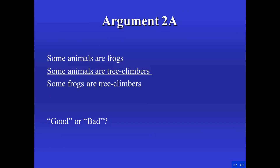Here's a different example argument. Some animals are frogs. Some animals are tree climbers. Therefore, some frogs are tree climbers. It happens that all the claims here are true as well, similar to argument 1a. But there's something different here. Even though it's true that some animals are frogs and true that some animals are tree climbers, does it have to be the case, on the basis of just those two claims, that some frogs are tree climbers? We can easily imagine a world in which the first and second premises are true but, contrary to the way the world actually is, there are no frogs that climb trees. That is, we can easily imagine the premises being true and the conclusion false. So we can see that there's not quite the proper connection as there was in the previous three arguments.